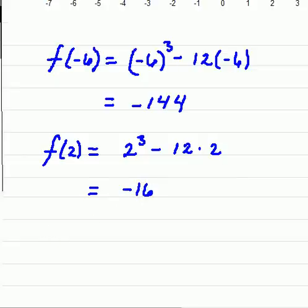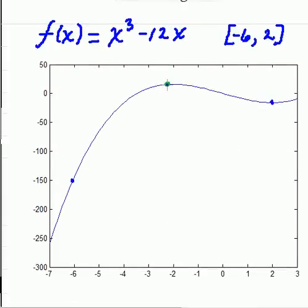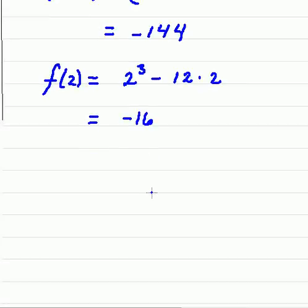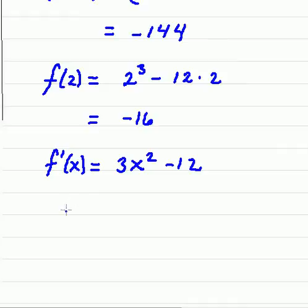Now, we need to find this y value here. And that's when the tangent line at this point is 0. And so we need to find what that critical value is. We need to first find the derivative. So f'(x) = 3x² - 12. And the slope is 0.